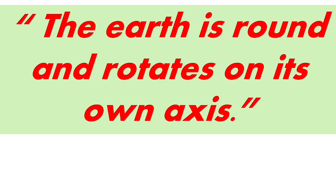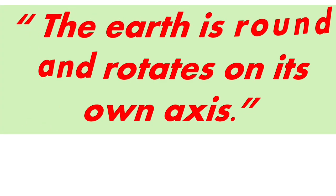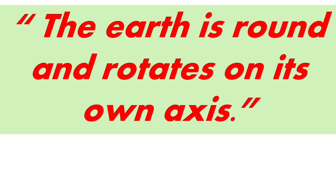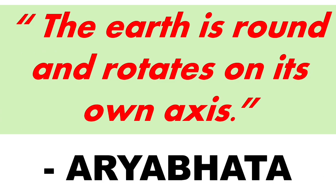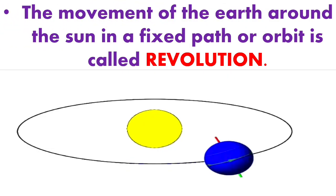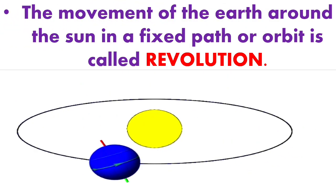Do you know who stated that the earth is round and rotates on its own axis? It was the ancient Indian astronomer Aryabhata. Now, the second motion of the earth is revolution. The movement of the earth around the sun in a fixed path or orbit is called revolution.